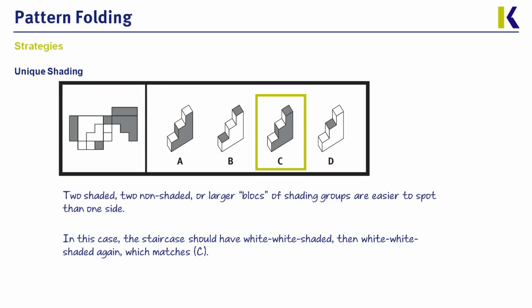However, we can see that that top shaded square is connected with two unshaded squares, and that meshes up here. It's the only answer choice that looks close, so we definitely know that this one must be correct. So here we're able to identify unique shading to figure out that C is right.